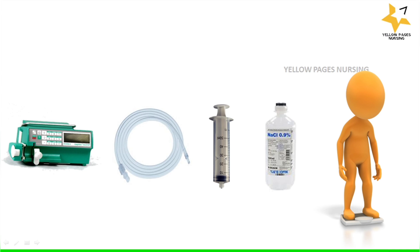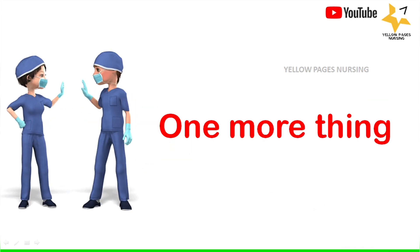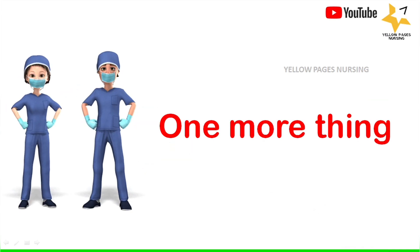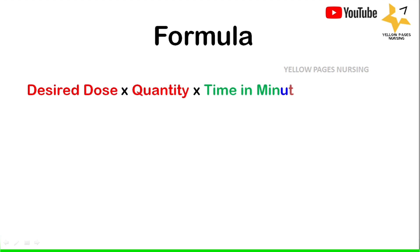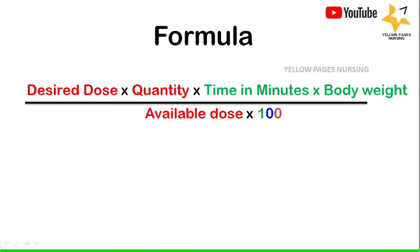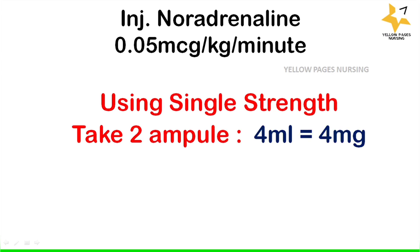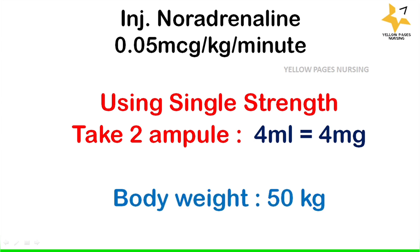Before beginning an infusion, ensure the presence of a very good intravenous access line. The formula is: desired dose × quantity × time in minutes × body weight ÷ (available dose × 1000), which gives the rate in ml per hour. For the first example — noradrenaline 0.05 microgram per kg per minute using single strength — take two ampoules: 4 ml equals 4 milligram, body weight 50 kilogram.